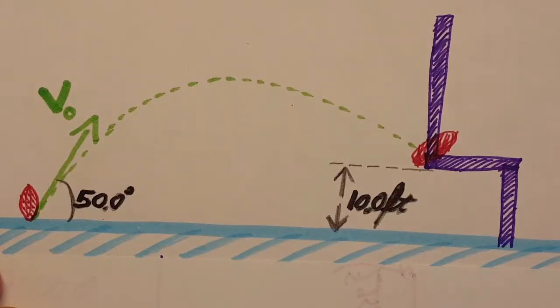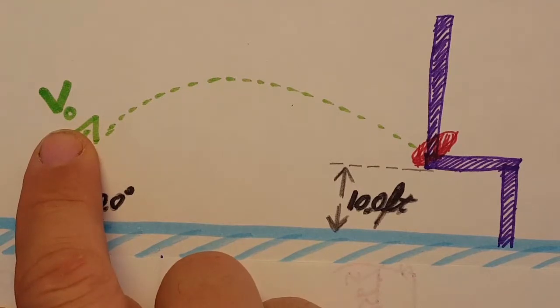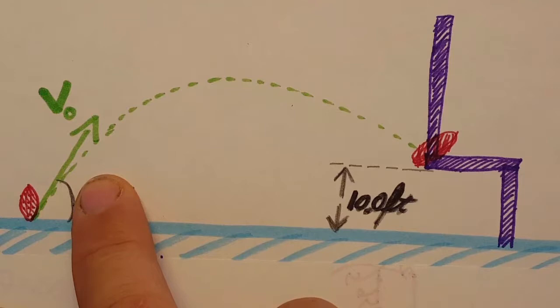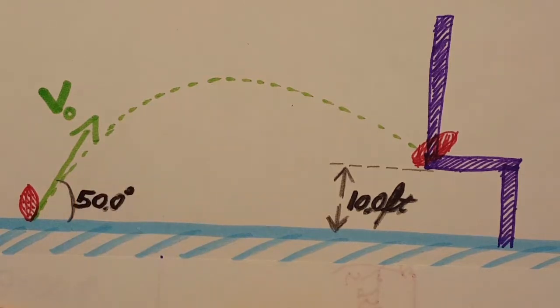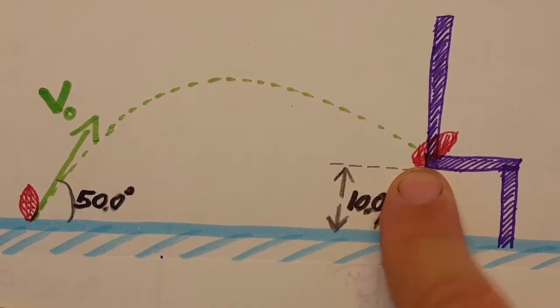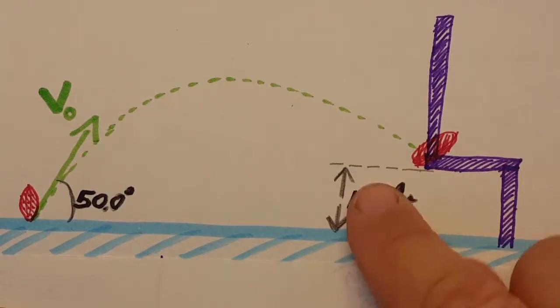Okay, we're gonna do some football physics. In this problem a kicker kicks the ball so that it leaves the ground with a velocity V0 at 50 degrees above horizontal. The ball follows the path and 3.24 seconds later hits the crossbar of the goal post which is 10 feet above the ground.